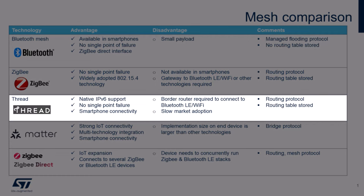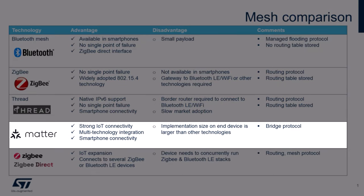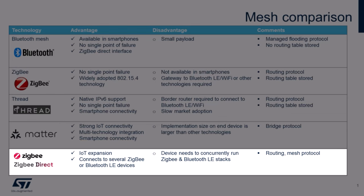Thread is also based on IEEE 802.15.4 and, like ZigBee, is a self-healing mesh networking protocol. Thread is the only mesh technology based on native IPv6 support enabling end-to-end routing, and some smartphones have started to incorporate Thread radio, though a border router is needed for internet connectivity. MATTER is an industry-unifying standard using Bluetooth LE for device setup and Wi-Fi, Thread, and Ethernet for connecting devices, but end devices must meet specific requirements including sufficient memory and concurrent Bluetooth LE and Thread or Wi-Fi operation. Similarly, ZigBee Direct needs a device capable of concurrently running ZigBee and Bluetooth LE stacks, but provides direct access from phones and tablets to control ZigBee products.